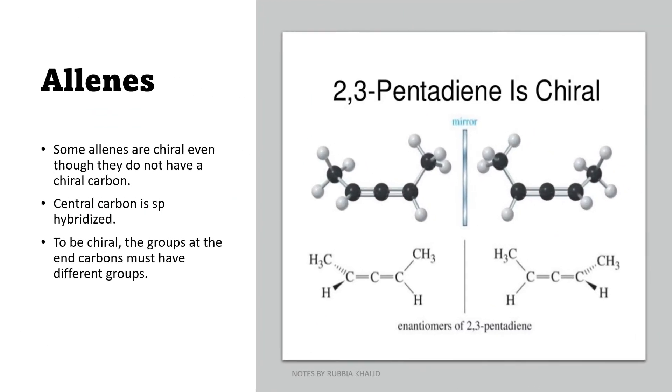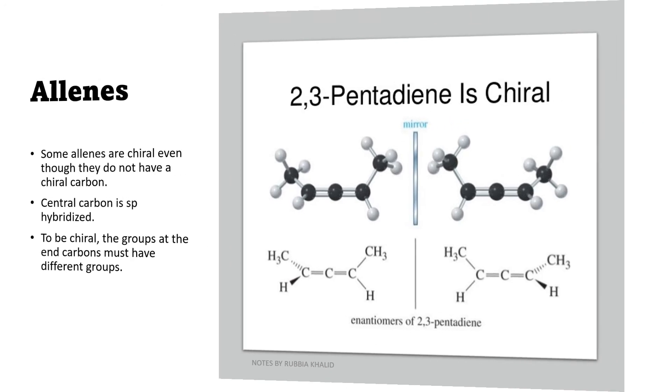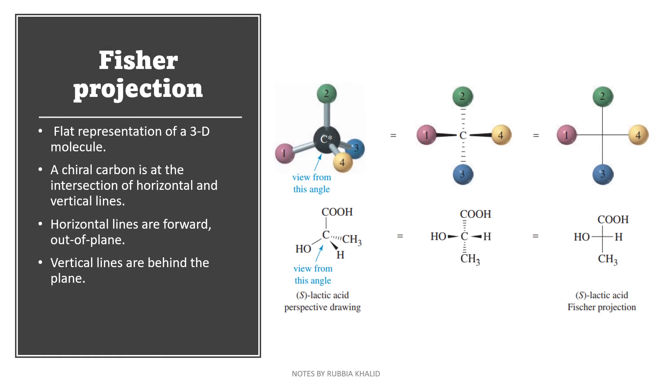Next, we have allenes. Some allenes are chiral even though they do not have a chiral carbon. Central carbon is sp hybridized. To be chiral, the groups at the end carbon must have different groups.